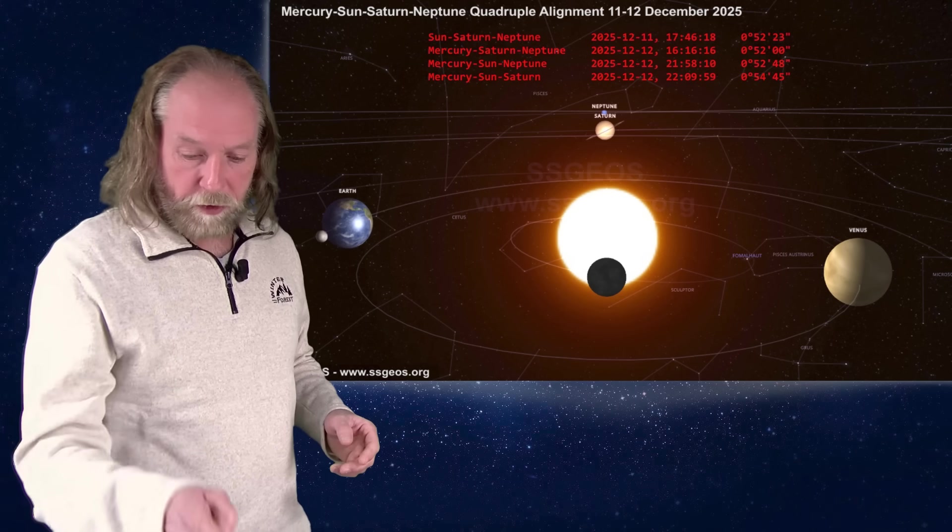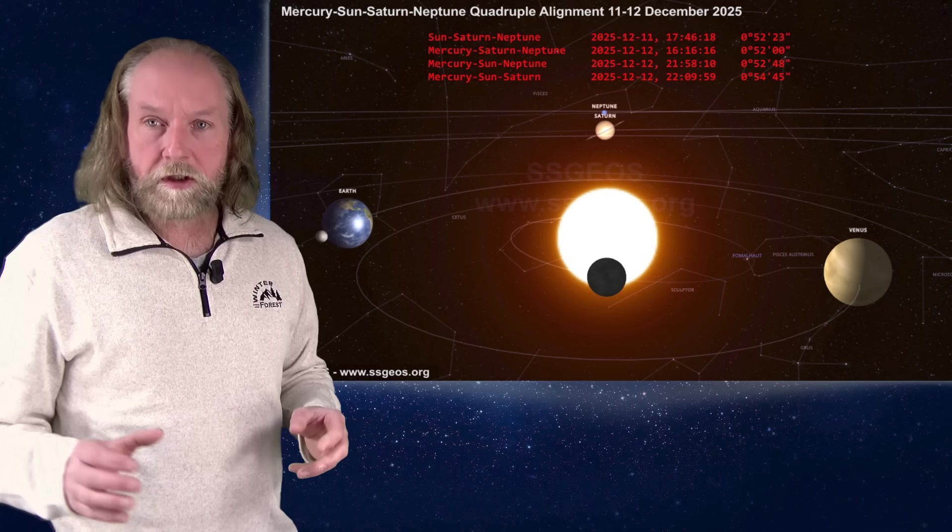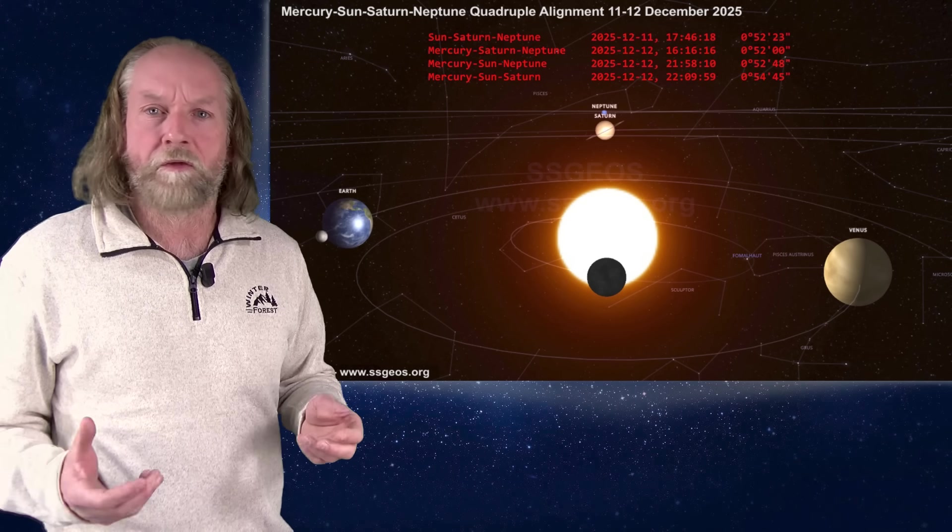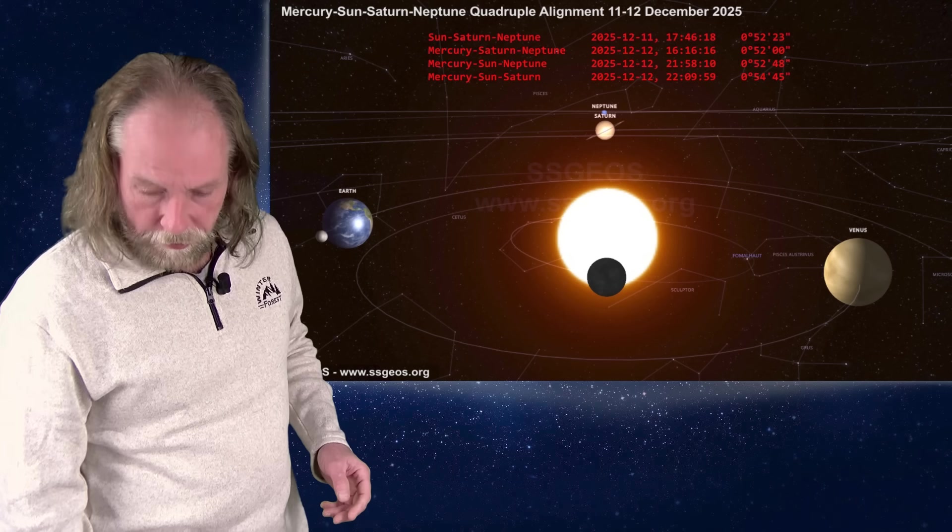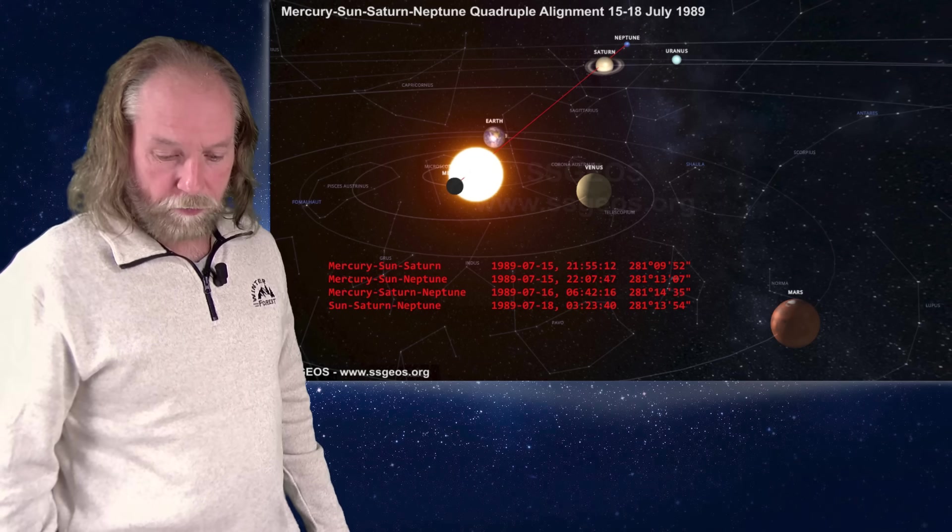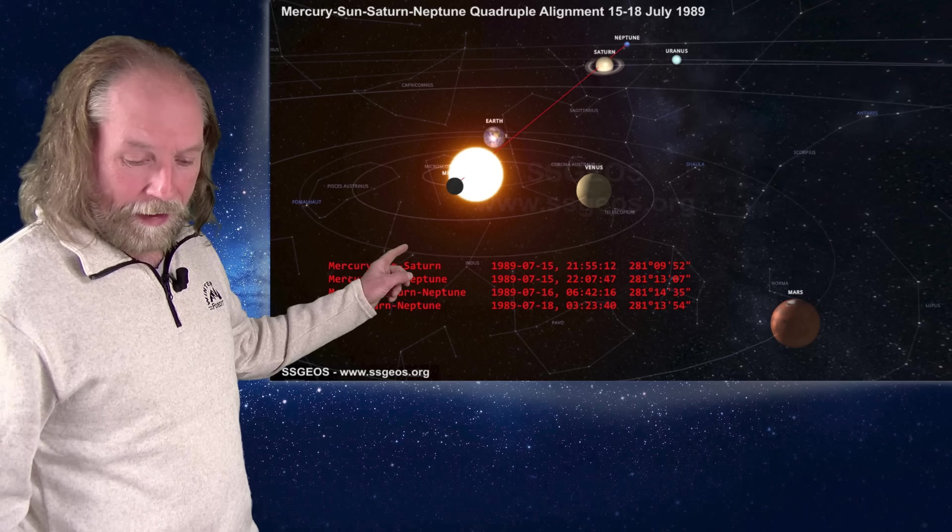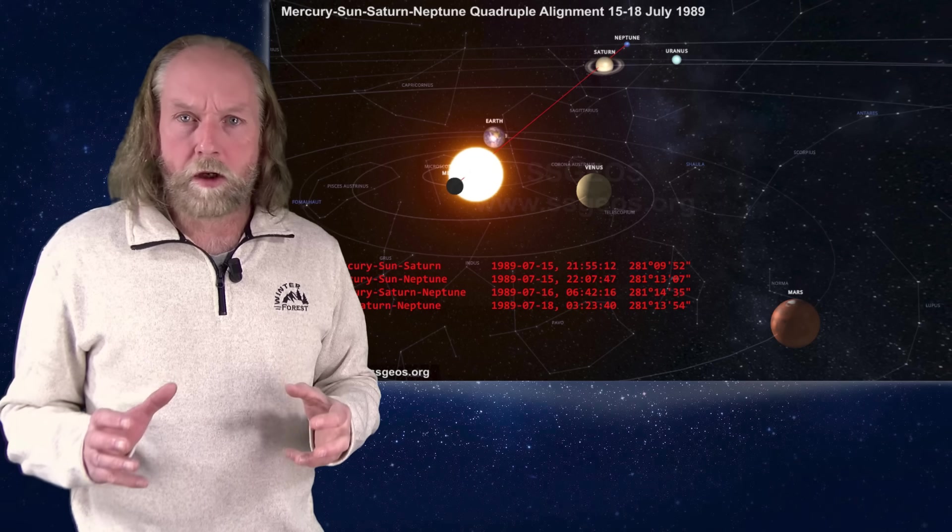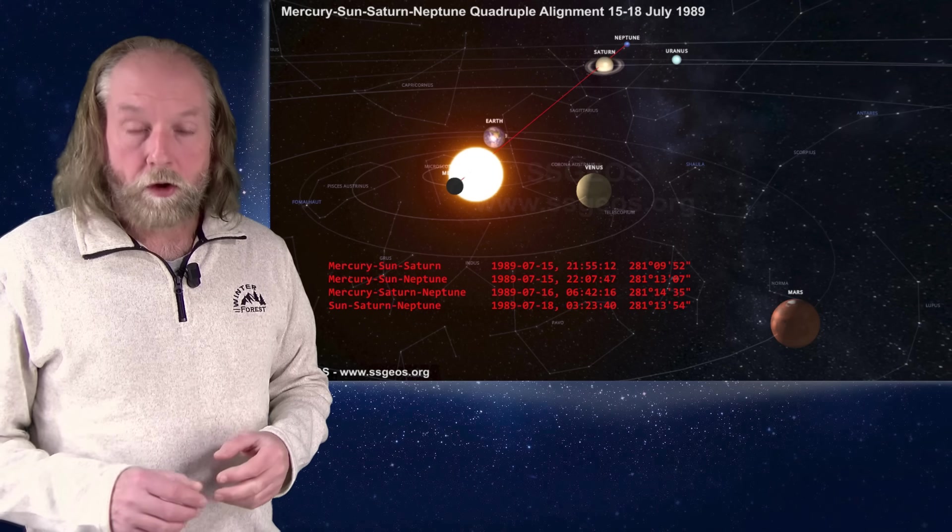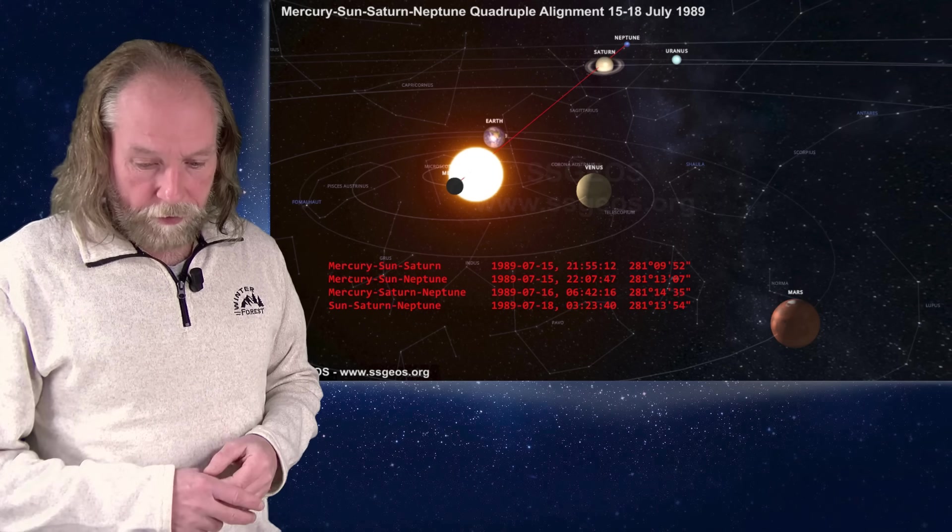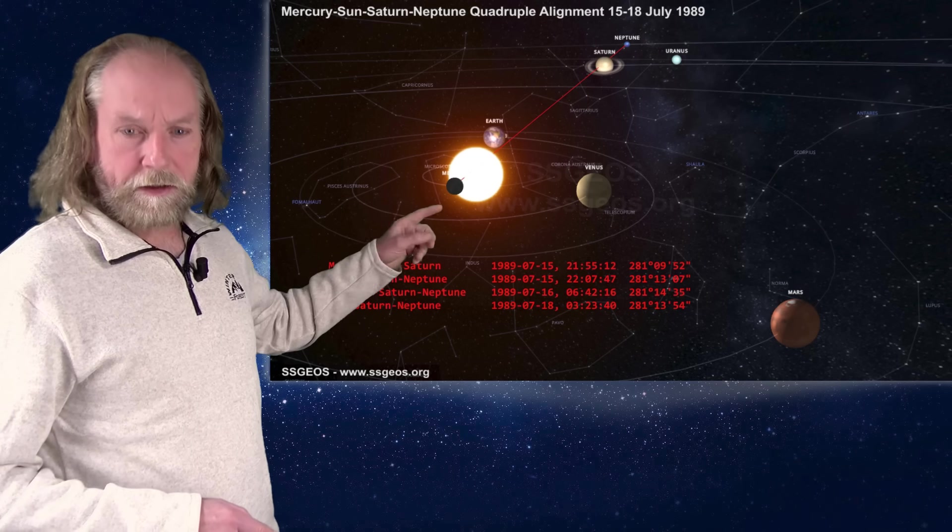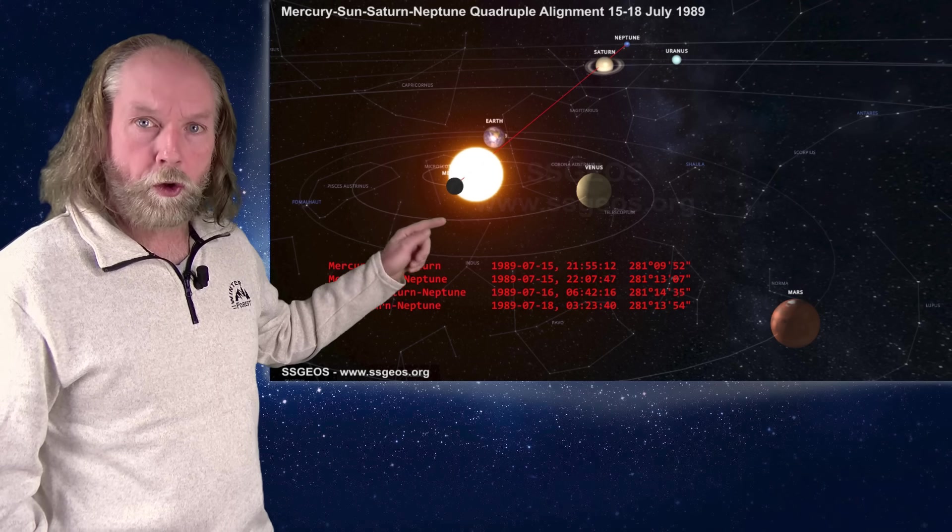But I was curious about this specific geometry, because 36 years ago, when the grand conjunction also happened, the positions of the other planets were very different. So I expected Mercury to be in a very different position as well. But that was not the case. We see Mercury again on the other side of the Sun, again forming a quadruple conjunction with the Sun, Saturn and Neptune, also pretty tight, because it was from 15 to 18 July 1989 that this grand conjunction, including Mercury, occurred.